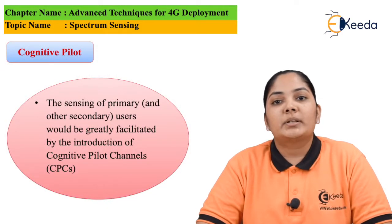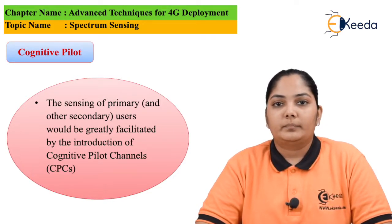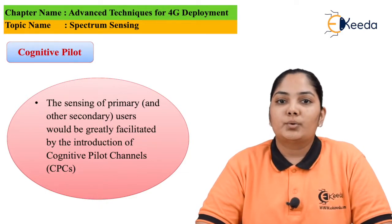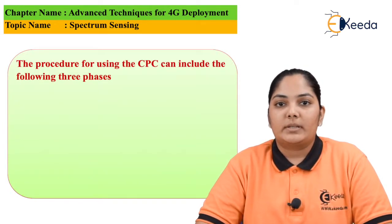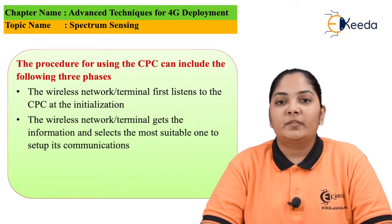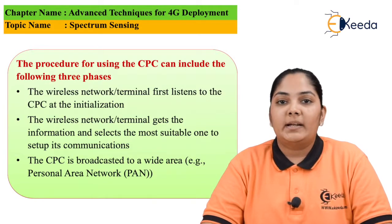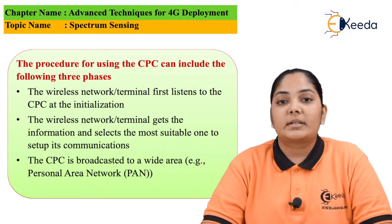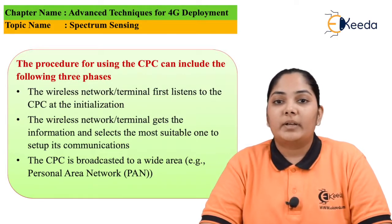Another way to detect spectrum availability is using cognitive pilot channels (CPC). These pilot channels give information about what amount of spectrum is going to be free. The procedure for using the CPC is in three ways: first, the cognitive radio channel is listened to at the start of transmission; second, the network or terminal gets the information during transmission and selects the most suitable format; and finally, the CPC is broadcast to wide area or personal area networks. In this way, we are able to find out what amount of spectrum is going to be free, and spectrum sensing is possible for other users.